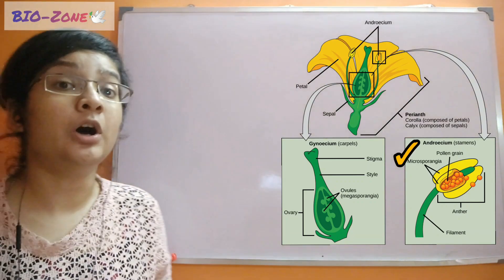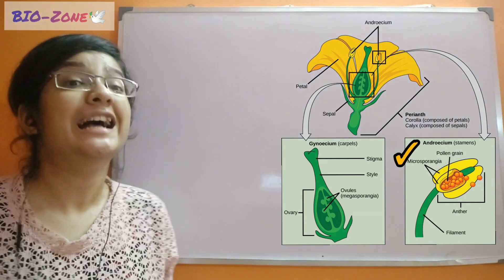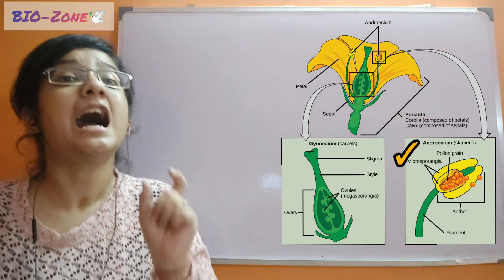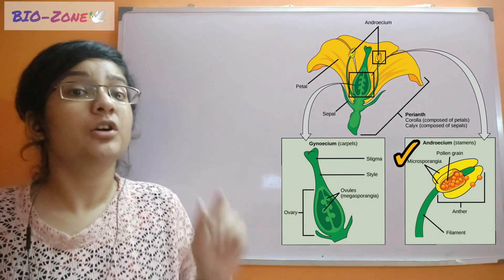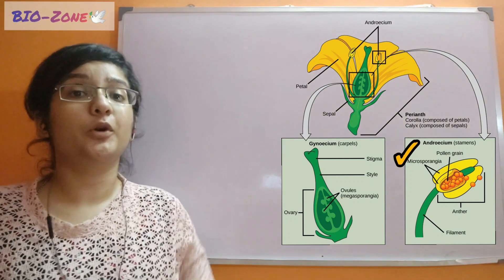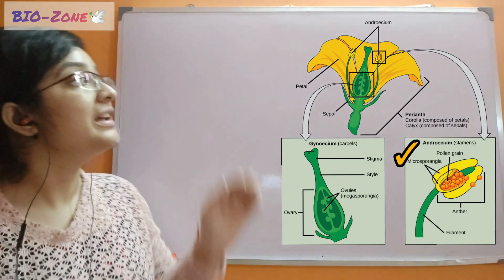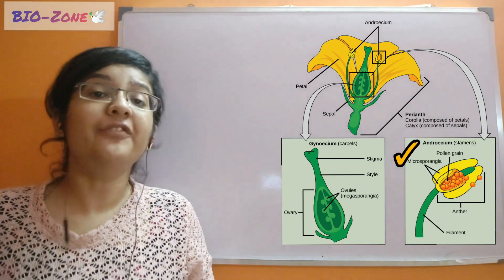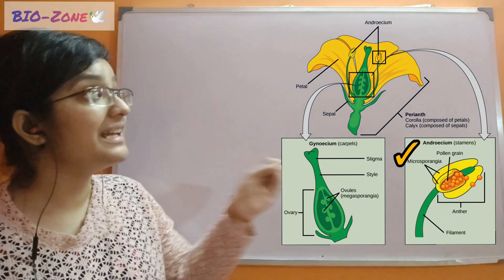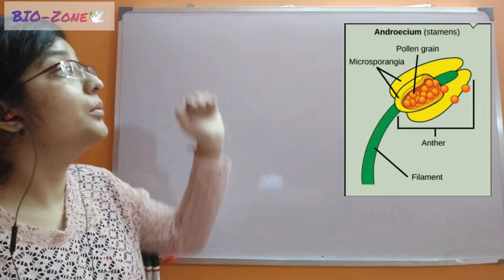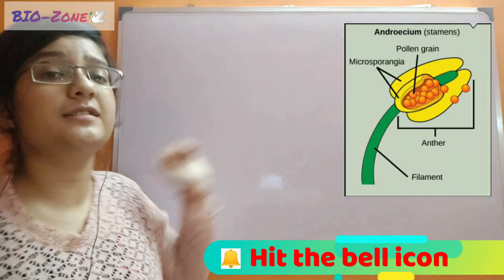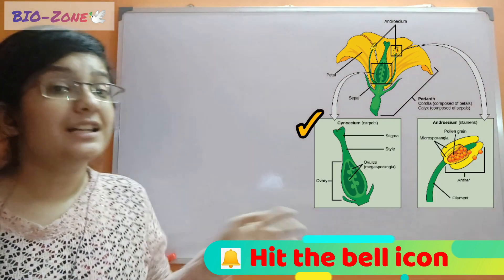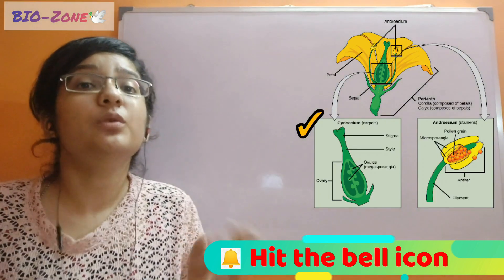The first of the remaining two is called the androecium, meaning 'house of the male' — so it is the male reproductive part. This is made up of many stamens. Each stamen has two parts: one is called the anther, and another is called the filament. Next and the last portion is called the gynoecium.